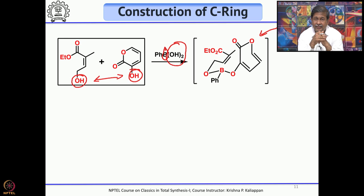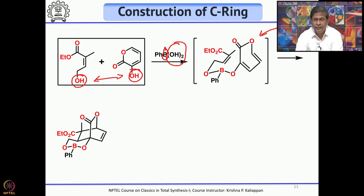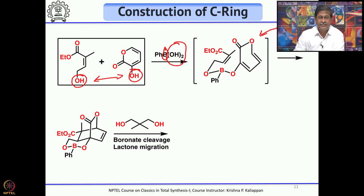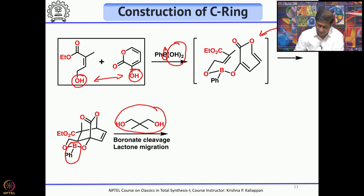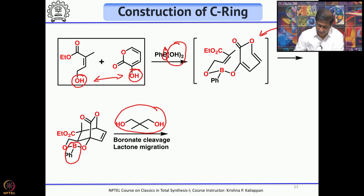To remove the boron, you treat with a diene — it is very easy to cleave the boron-oxygen bond this way. After the boron is cleaved, you look at the structure and see you have a diene. But when you isolate the product, a minor rearrangement has occurred: a 6-membered lactone is broken and a 5-membered lactone is formed.